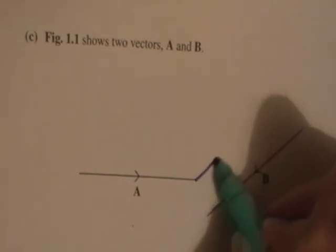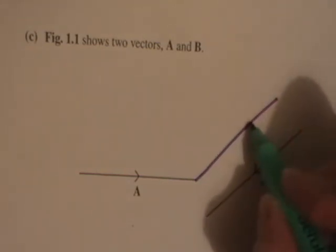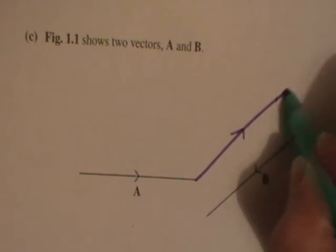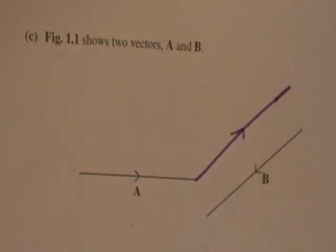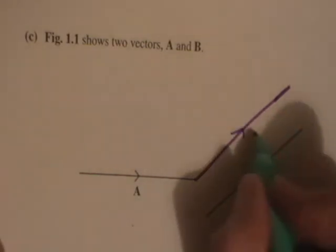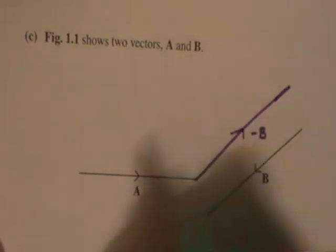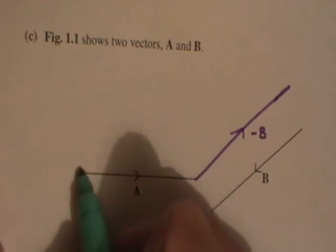I'm going to draw it freehand here—I know I shouldn't really—but so there's your minus B. And then the vector which is A minus B is A plus minus B here, and therefore you want to draw a resulting vector...